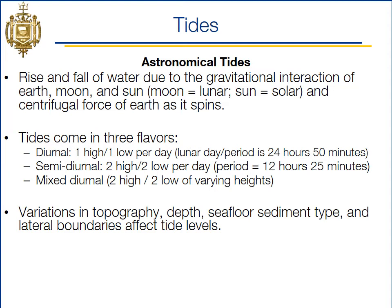There are three main categories of tides. Diurnal means you have one high and one low per day, and the cycle is slightly longer than 24 hours — specifically 24 hours and 50 minutes. Semi-diurnal means you have two highs and two lows every day, with a cycle of exactly half that: 12 hours and 25 minutes. Every 12 hours and 25 minutes in a semi-diurnal cycle, you will have a high tide, and every 12 hours and 25 minutes, you'll have a low tide.